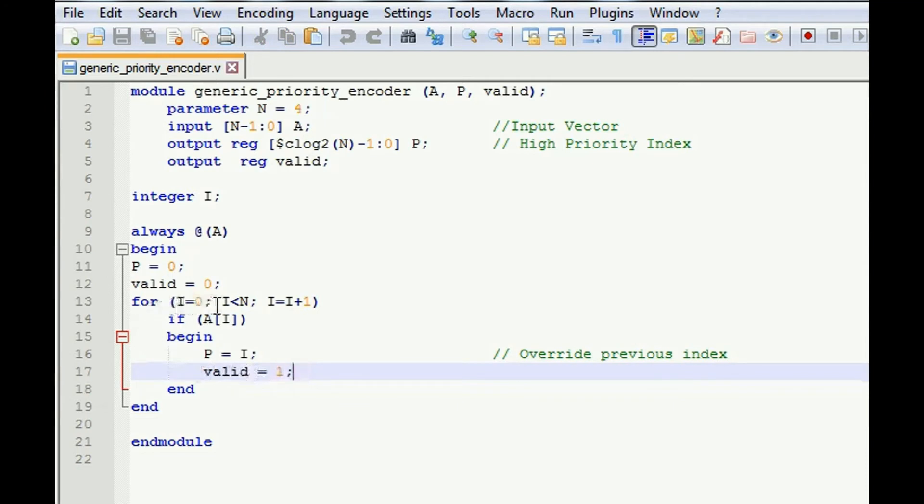Again our logic checks: if i will be 2 and A[2] if it is high, then P will become 2. And at the last, i will be equal to 3. If A[3] is high, then P will become 3 and valid will be high, because A3 is the highest priority bit.